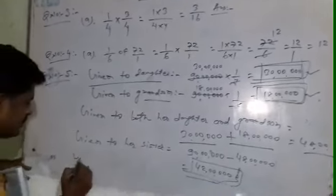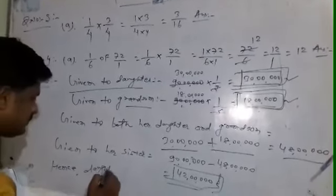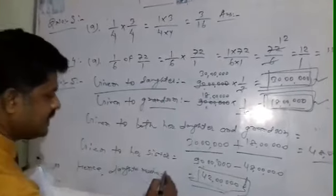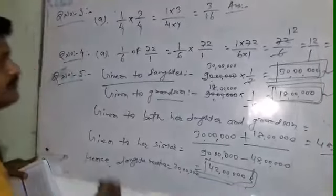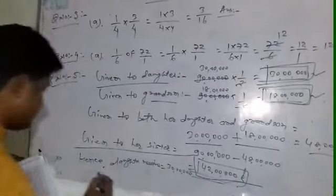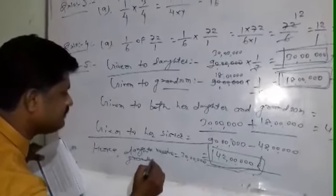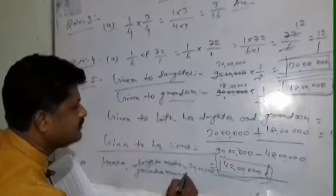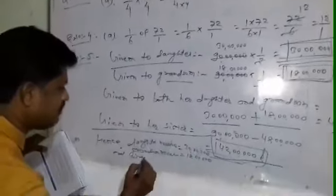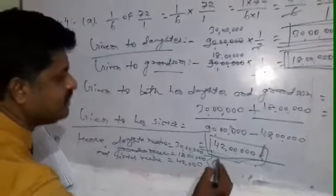Hence: daughter received 30 lakh, grandson received 18 lakh, and sister received 42 lakh. This is your answer.